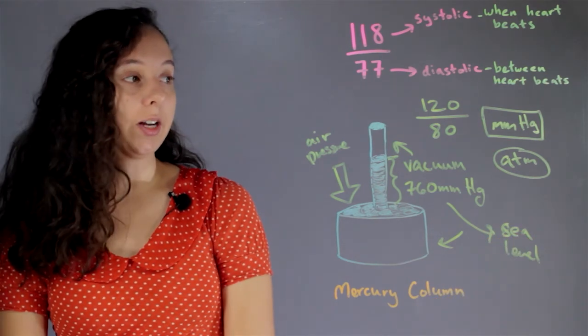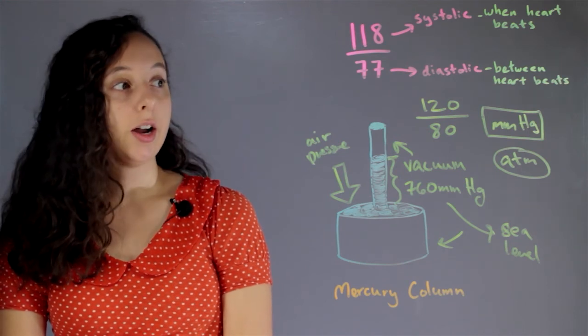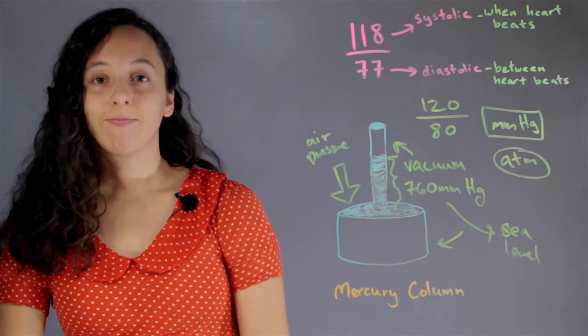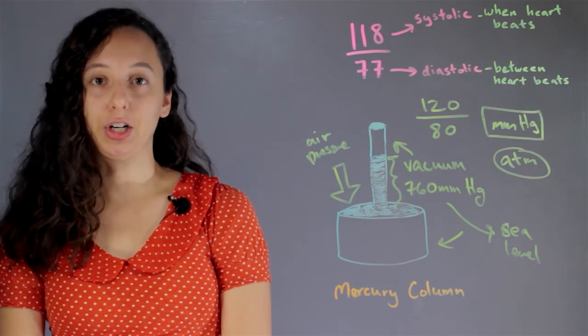And so that's where it came from. And we continue to this day to use it as a system of measuring pressure. And we just happen to use it for measuring blood pressure. I'm Robin Higgins, and this has been the physics of blood pressure and the mercury column.